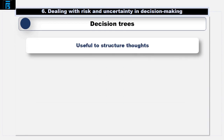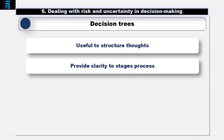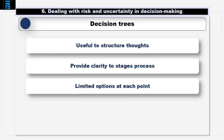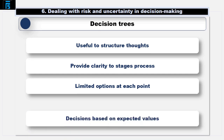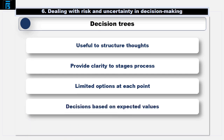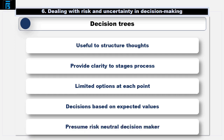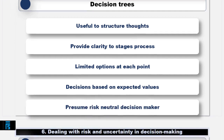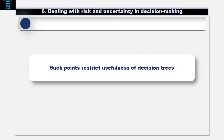Decision trees are useful as they help us to structure our thoughts and give clarity to a staged process. However, in the main we are assuming there are limited options at each point, otherwise the tree becomes unwieldy. We know the probabilities and possibilities and are happy making decisions based on expected values — this latter assumption presumes we are therefore risk neutral. In reality, these points restrict the usefulness of decision trees, and these points should be noted in your exam if called upon to criticize decision trees as a technique.